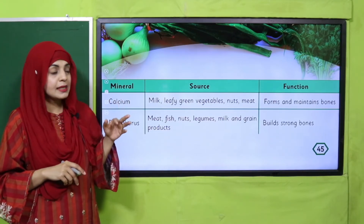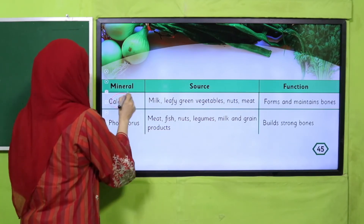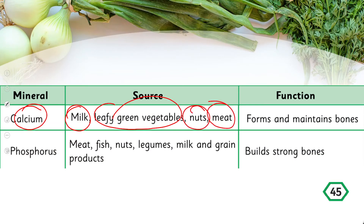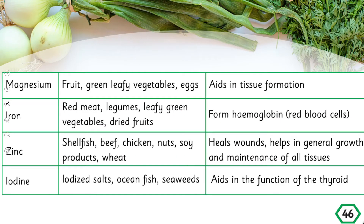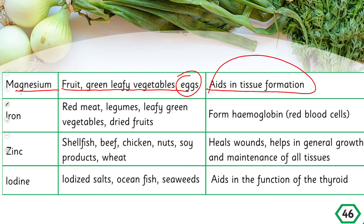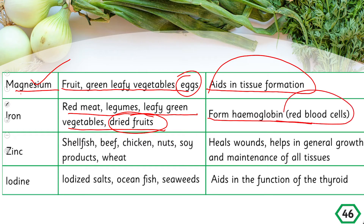Now let's discuss each mineral from pages 45 and 46. Calcium: present in milk, leafy green vegetables, nuts, and meat — it forms and maintains bones. Phosphorus: present in meat, fish, nuts, legumes, milk, and grain products — it also builds strong bones. Magnesium: present in fruits, green leafy vegetables, and eggs — it aids in tissue formation, helping form our muscles and tissues. Iron: present in red meat, legumes, leafy green vegetables, and dry fruits — it forms hemoglobin and red blood cells.